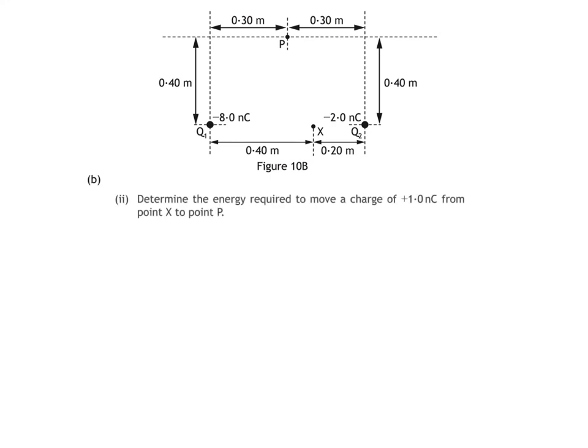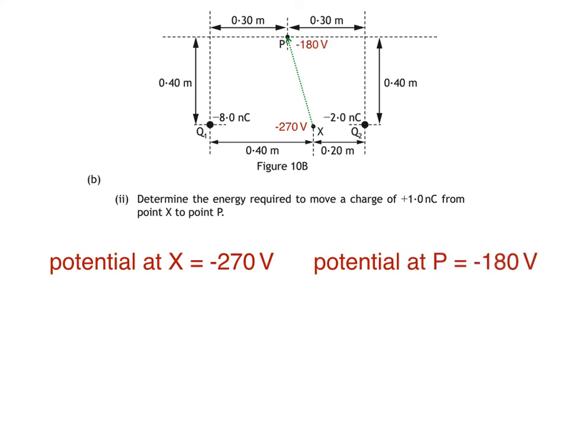Here's the last part of the question. B part 2 asks us to determine the energy required to move a charge of plus 1.0 nanocoulombs from point X to point P. Remember that point X is at a potential of negative 270 volts, and we have to move a positive charge of 1 nanocoulombs to point P, which is at a potential of negative 180 volts. The first thing we do is find the potential difference between the two points. That's the final potential at point P minus the initial potential at point X. So the potential difference is negative 180 minus negative 270, which is 90 volts.